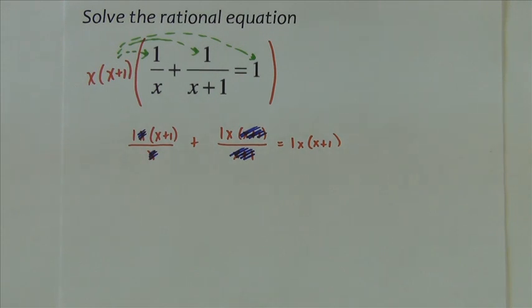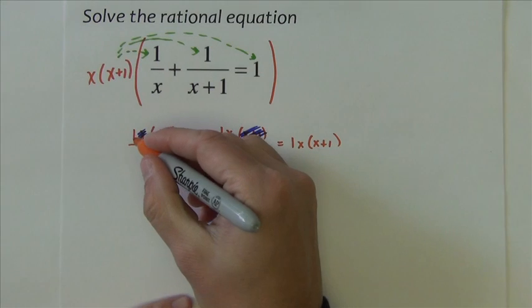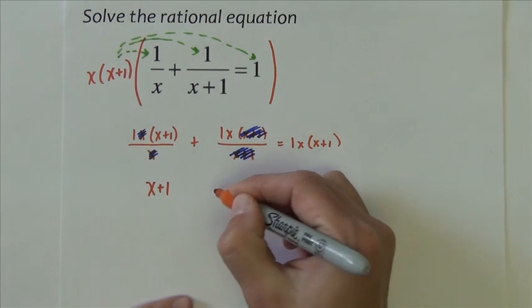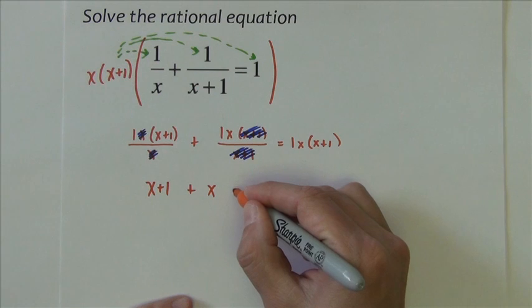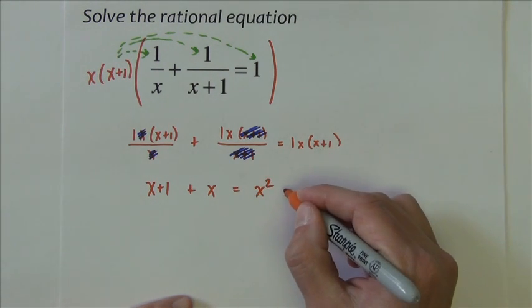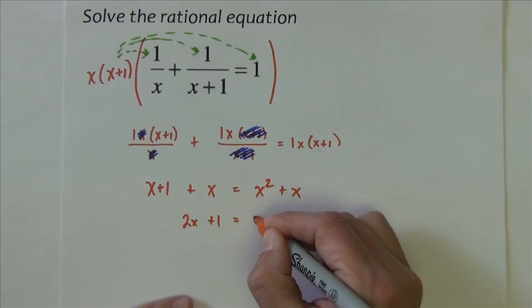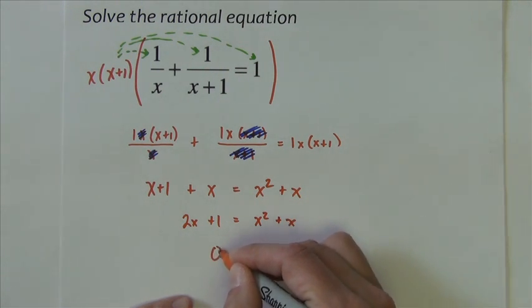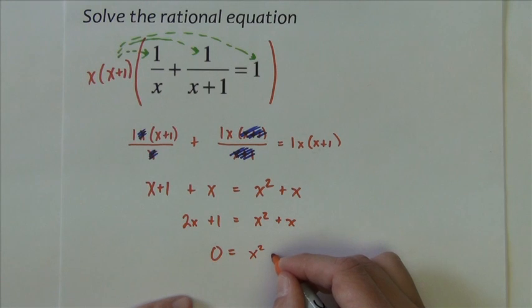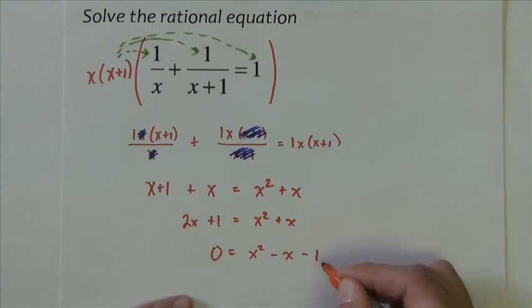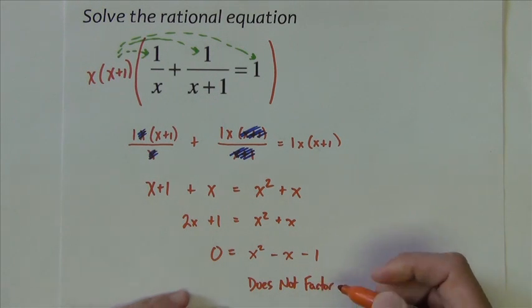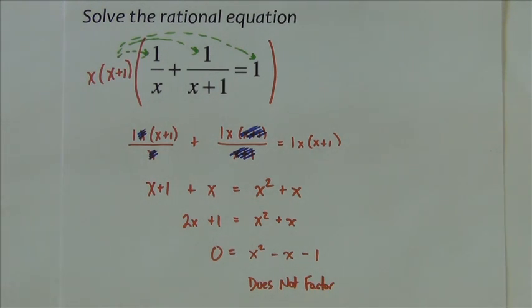And what's left behind is an equation that does not have fractions. I have 1 times x plus 1, which is x plus 1, plus 1 times x, which is x, equals x times x plus 1, which is x squared plus x. So I've got on this side 2x plus 1 equals x squared plus x, going to make it equal to 0. So I have x squared minus x minus 1. Now I check to see if that can factor. This does not factor. If it does not factor, that doesn't mean that there aren't answers. It just means that those answers aren't found by factoring.